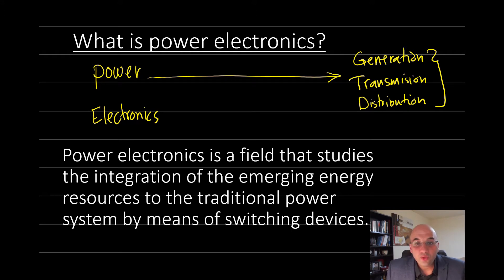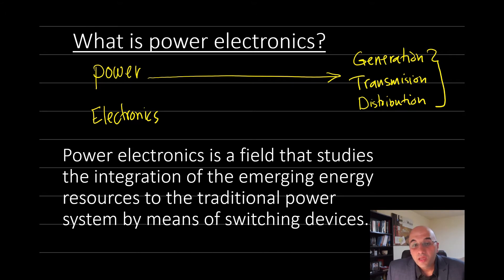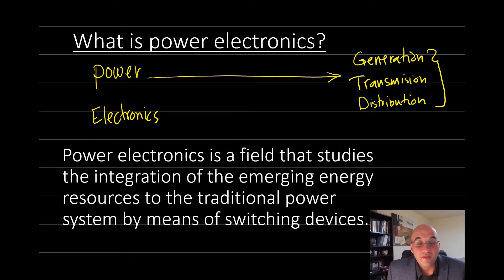There are two main things to focus on. Number one is the new energy resources, which includes photovoltaic systems, wind turbines, batteries, electric vehicles, and many other applications — any energy resources that do not belong to the traditional power system. The second important thing is the switching devices. I clearly say switching devices, not electronics or semiconductor devices, because switching devices specifically identifies power electronics.